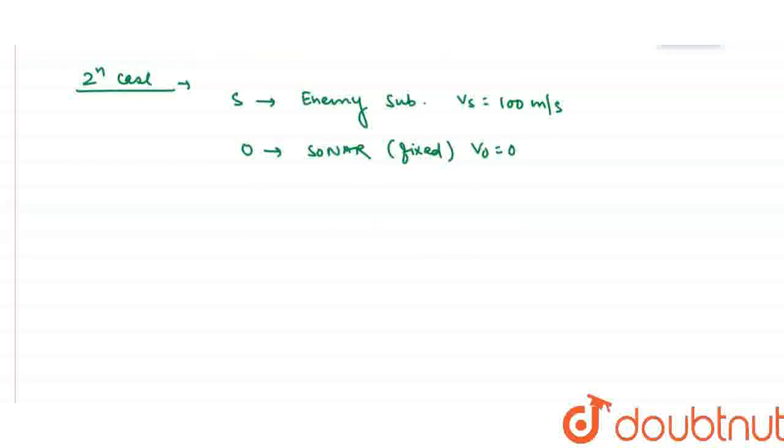Now I am going to use the Doppler effect. Nu double dash, the frequency is nu double dash, that equals nu dash V upon V minus Vs. Because enemy submarine is approaching the sonar, frequency is decreased, so V minus Vs. Solving this: nu double dash equals nu dash 4.276 into 10 to the power 4, V is 1450 upon 1450 minus Vs is 100. After solving, nu double dash is 4.59 into 10 to the power 4 hertz.